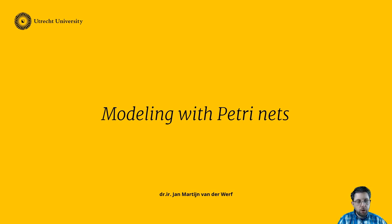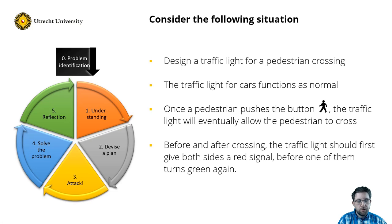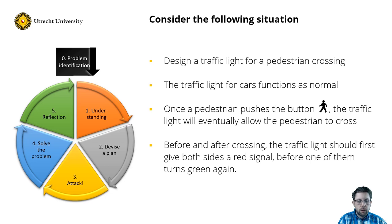In this clip I want to focus on how to model with Petri Nets. Let us consider the pedestrian crossing with the following three criteria. We have a traffic light for cars that should behave as normal, so it should move from red to green, then become yellow and then turn red again. And once the pedestrian pushes the button, the traffic light needs to eventually allow the pedestrian to cross. And there is the safety criterion that both lights should be red before one of them can turn green again.